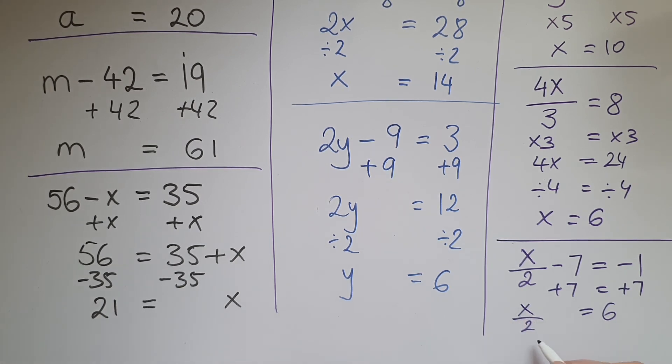So to get x on its own we're going to have to multiply by 2 both sides. So we have x is equal to 6 times 2 which is 12. Let's plug it back in: 12 divided by 2 gives 6, 6 take away 7 gives us negative 1.